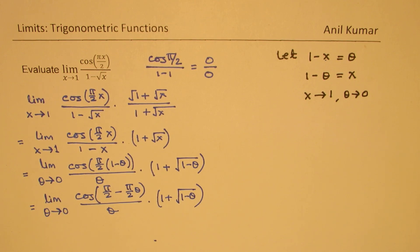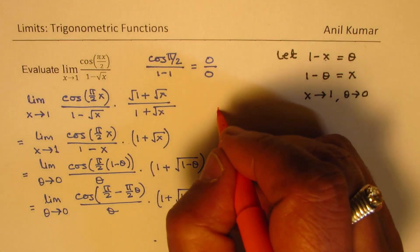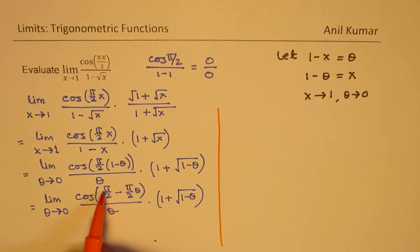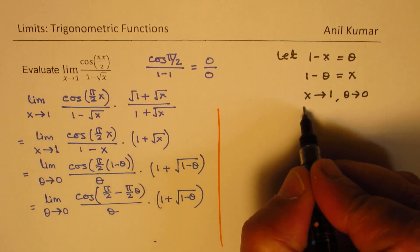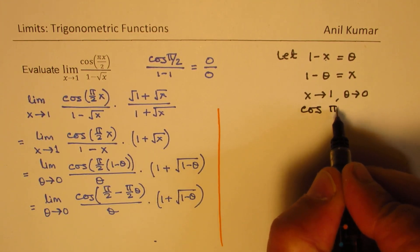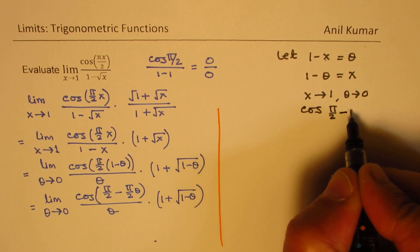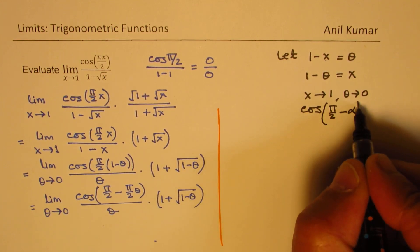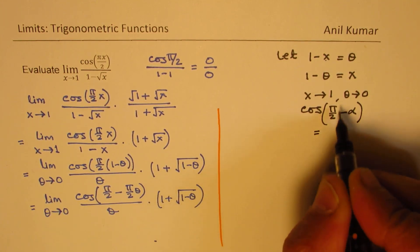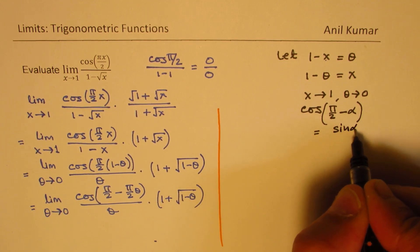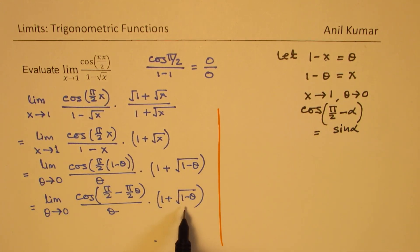As you can see, we can write π/2 minus πθ/2. As you know, cos(π/2 - α) equals sin α. So that substitution we are going to make here.